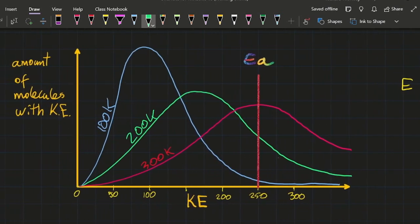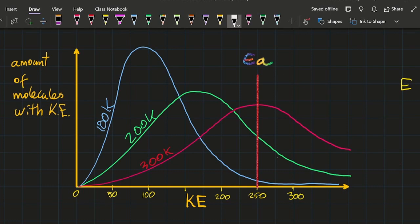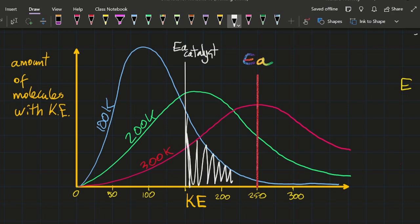Alrighty. Going back to this diagram, the Boltzmann distribution, let me draw in a line for the catalyst at 150. Nice. Annotate it. EA catalyst. Okay. So let's look at the cold situation, the 100k. Okay. So originally, only these reactants had energy greater than activation energy. But when you add a catalyst, all of these ones now have enough energy to react. Of course, again, at 100k.